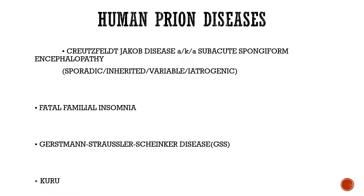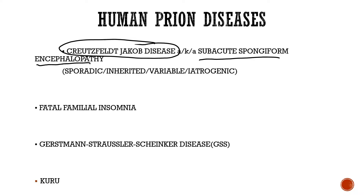The four important human prion diseases are: number one, Creutzfeldt-Jakob disease (CJD), also known as subacute spongiform encephalopathy — it has many types including sporadic, inherited, variable CJD, and iatrogenic CJD. Number two is Fatal Familial Insomnia. Number three is Gerstmann-Sträussler-Scheinker disease (GSS). And number four is Kuru.